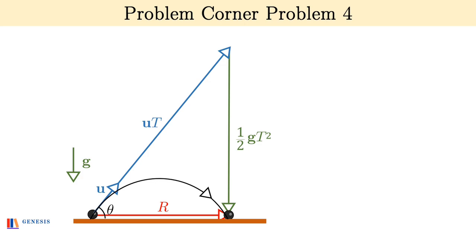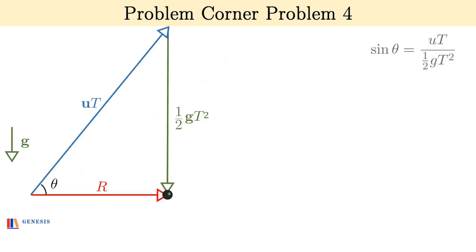Now in this triangle write sin θ. Sin θ is perpendicular by hypotenuse and that gives you uT by ½gT². Simplify and in one line you will get T = 2u sin θ / g, that is the time of flight.